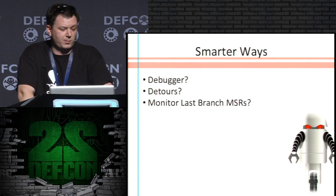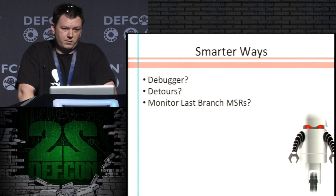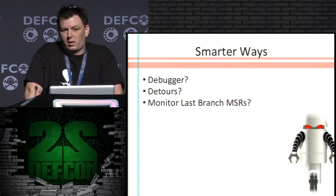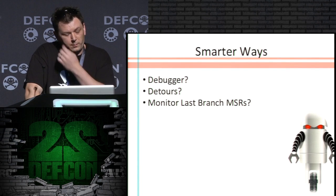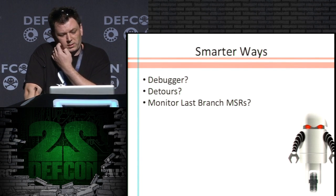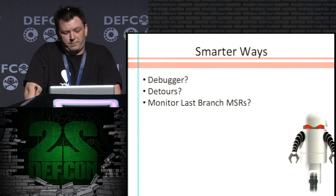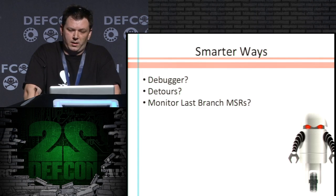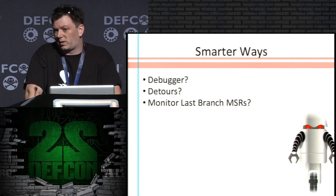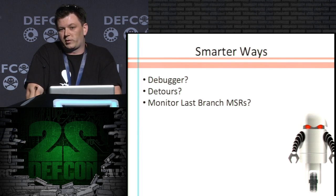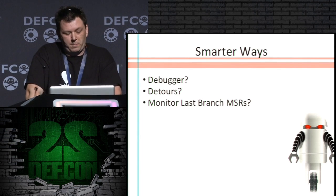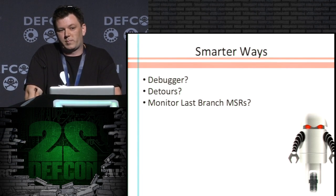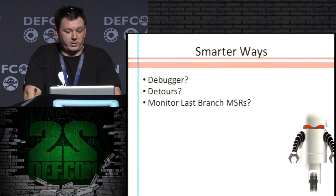There are probably smarter ways to do this — maybe in a debugger, or using detours. K-Bouncer in particular checks the MSRs for the last branch, and that's how they get their performance. PIN is pretty slow. It's nice and it's good for proofing out a concept, but it's not going to be a prime-time tool at this point.